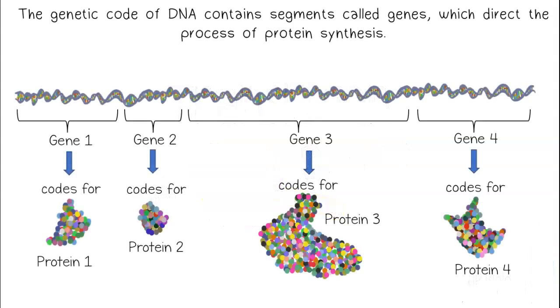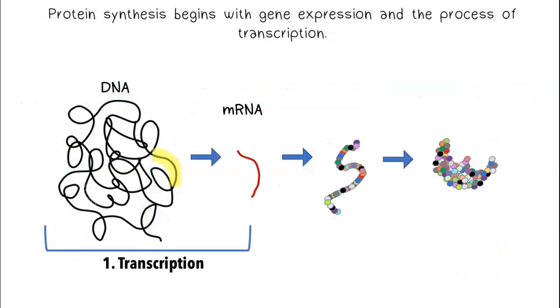The genetic code of DNA contains segments called genes which direct the process of protein synthesis. Protein synthesis begins with gene expression and the process of transcription.